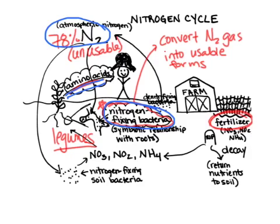Amino acids contain a nitrogen group, and those amino acids are used to make proteins — the building blocks. That's why peanut butter is a good source of protein, soy is a good source of protein, and beans are a good source of protein. They're all legumes.